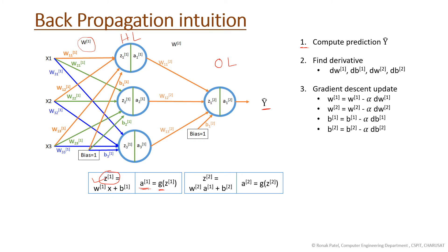The output a1 is multiplied with weight w2, and there is also a bias for each neuron. This gives us z2. We then apply the activation function on z2 to get a2, and that a2 is our prediction — that is y-hat.